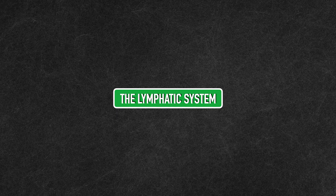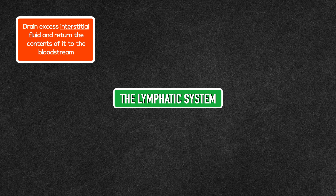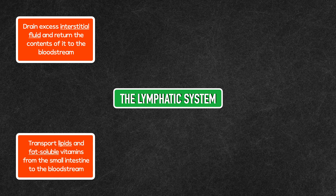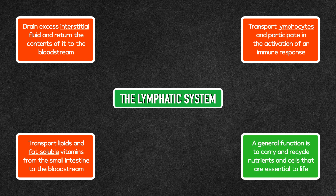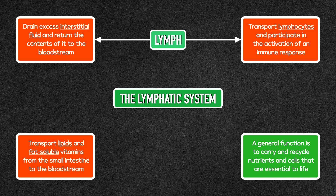The lymphatic system features a complex network of vessels that drain excess interstitial fluid and return its contents to the bloodstream, transport lipids and fat-soluble vitamins from the small intestine to the bloodstream, and transport lymphocytes and participate in the activation of an immune response. As such, a general function of the lymphatic system is to carry and recycle nutrients and cells that are essential to life. When it's just the contents of the interstitial fluid and lymphocytes, the fluid that travels in the lymphatic vessels is called lymph.